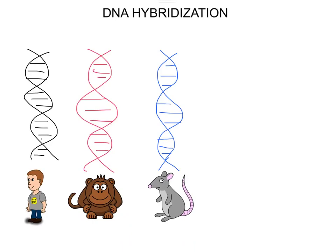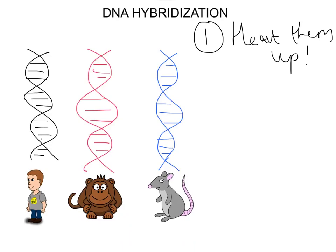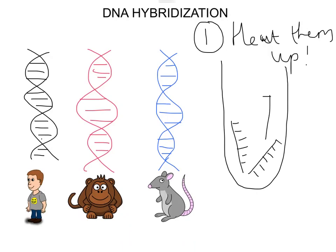The first thing you need to do is heat the DNA sample. You take a sample of DNA from all of the species and heat them up. What you find is that all the strands break apart — all the hydrogen bonds between the bases are broken — and you just have a tube full of all these broken-up single strands.